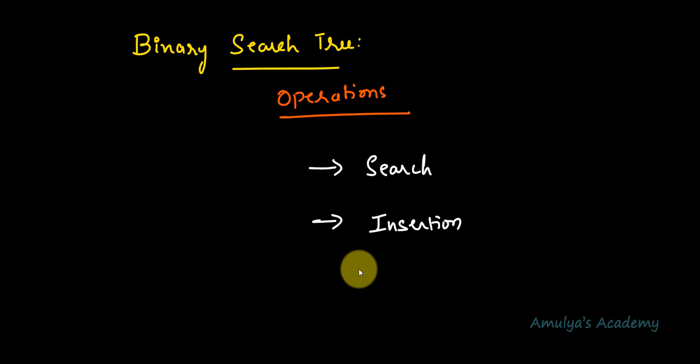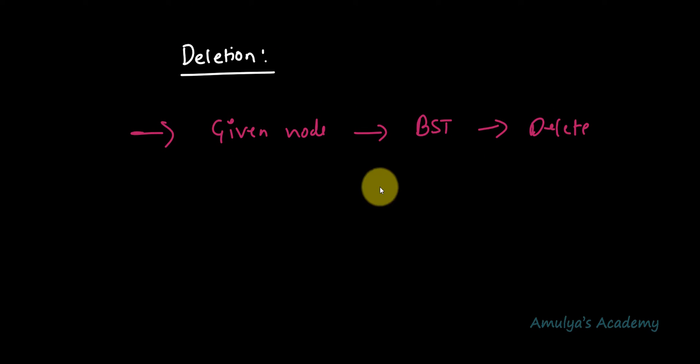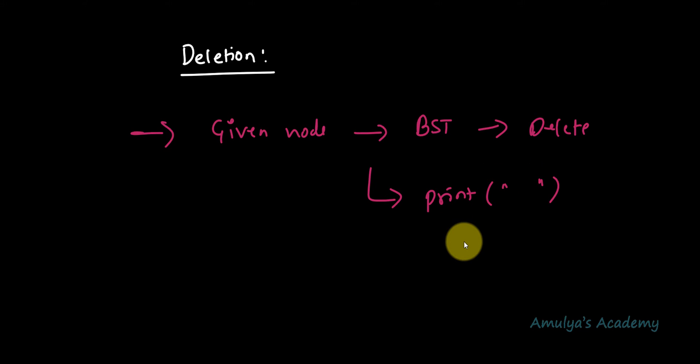In this tutorial we will talk about deletion operation — how to delete a node from a binary search tree. This delete operation deletes a node from the binary search tree. It will delete the given node if it is present. If it is not present then it will print a message. Before deleting the node we need to search for the node.